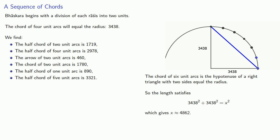And so using the same division of the circle, Bhaskara finds the chord of six-unit arcs is 4,862. And that gives us our half-chord of three-unit arcs, 2,431.